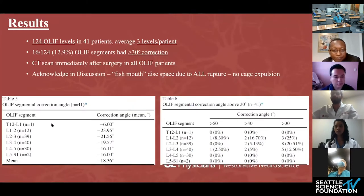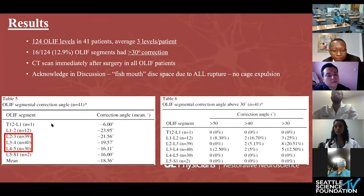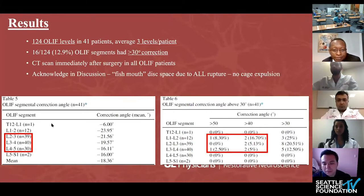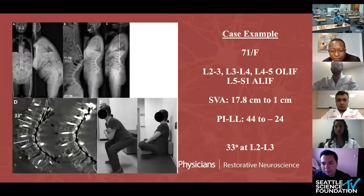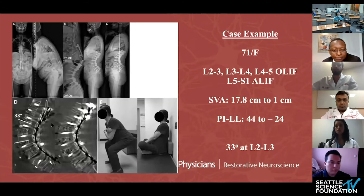In the OLIF group, the average was 3 levels per patient with average correction per level of about 18 degrees, mostly from L2 to L5. CT scans were obtained in all patients postoperatively. In 8 of the 16 levels studied, correction exceeded 30 degrees, and 8 had more than 40-degree correction — which the authors acknowledged in the discussion was due to ALL rupture from forced posterior compression. A case example shows a 71-year-old female with a multilevel OLIF, CT scan showing more than 30-degree correction and a fish-mouth appearance from forceful posterior compression and ALL rupture.